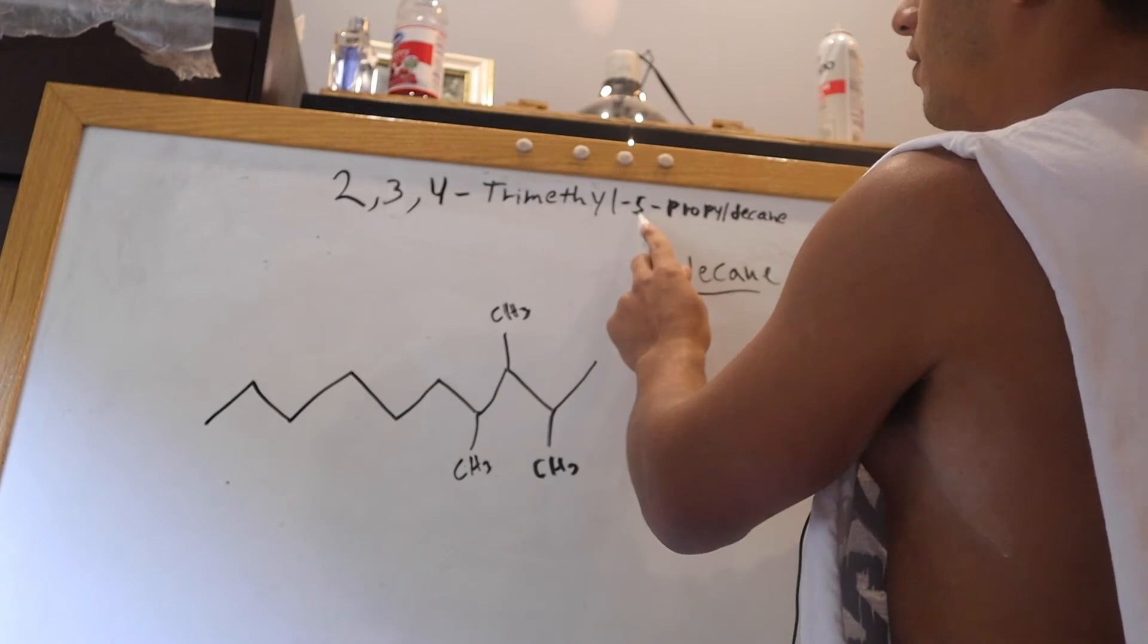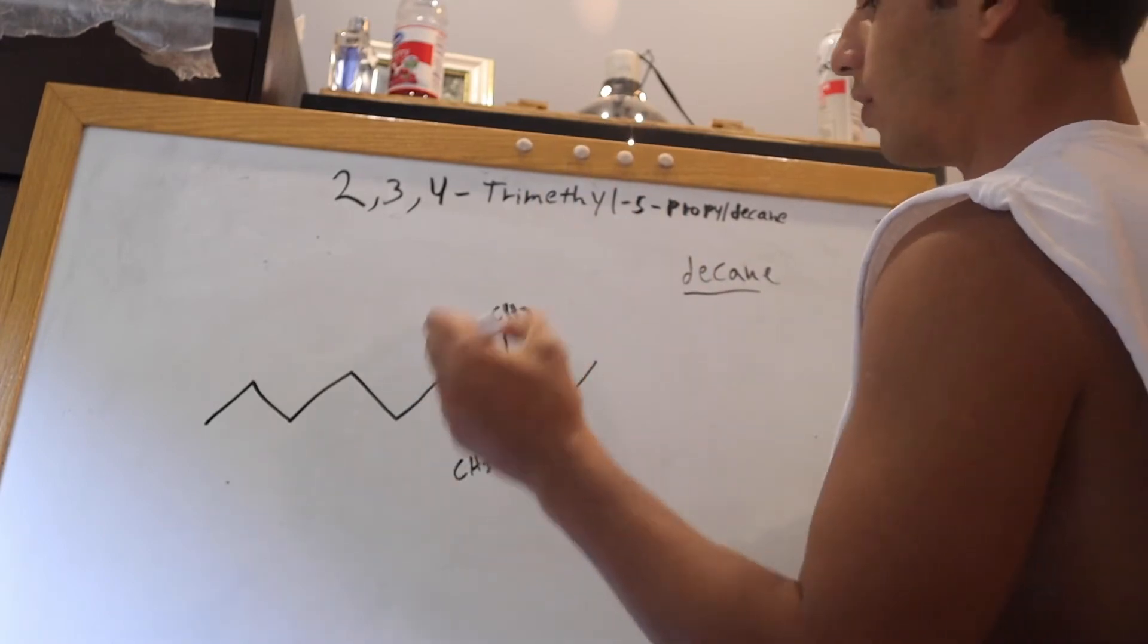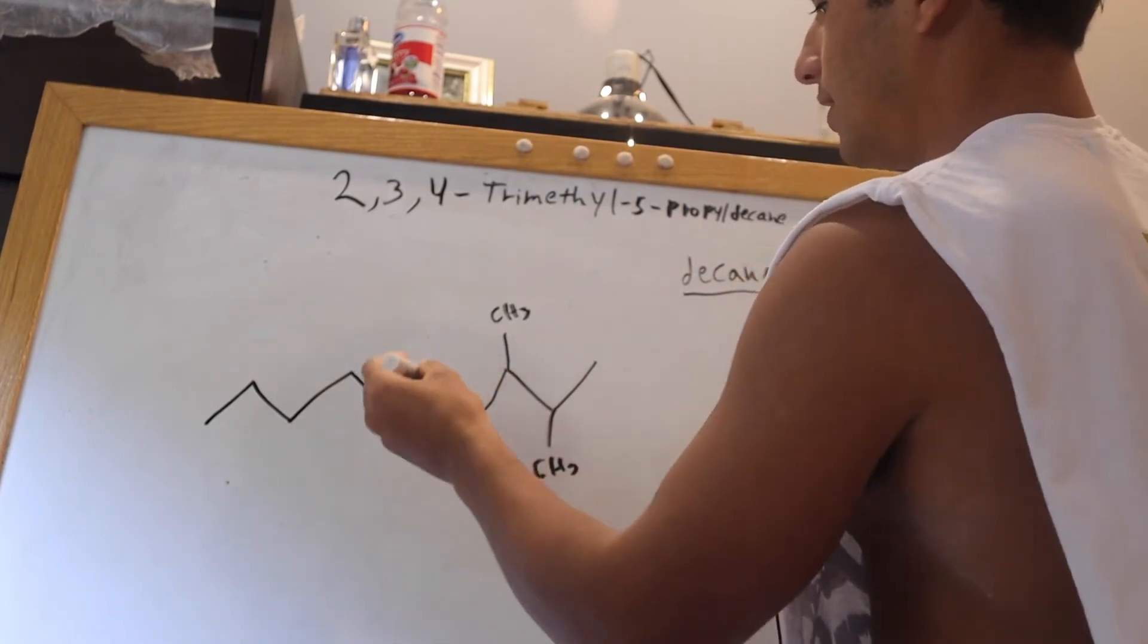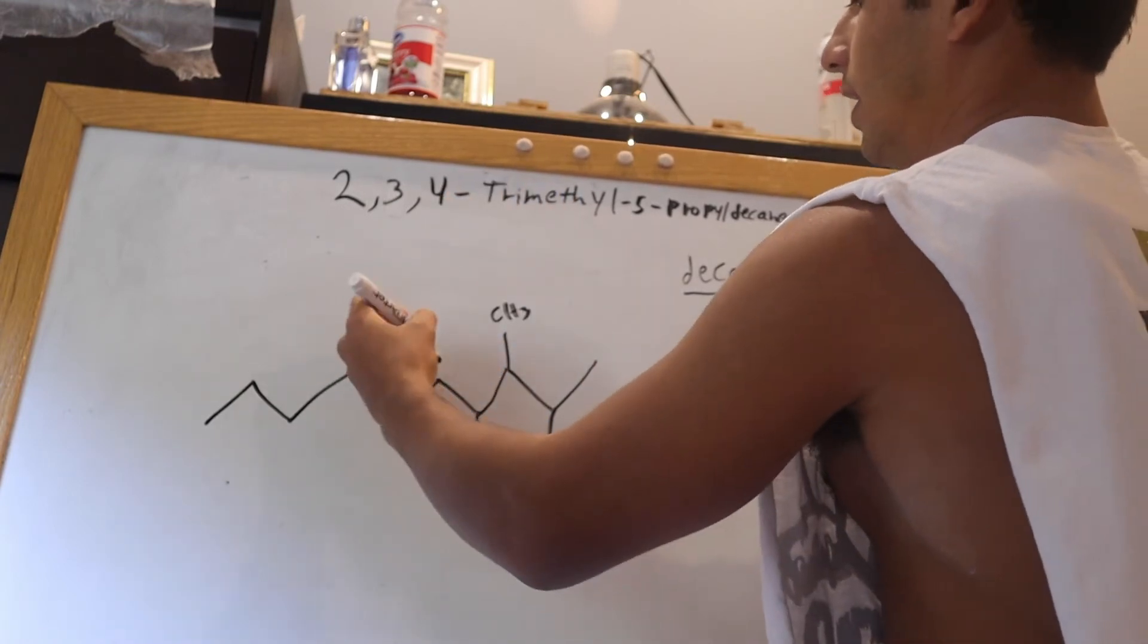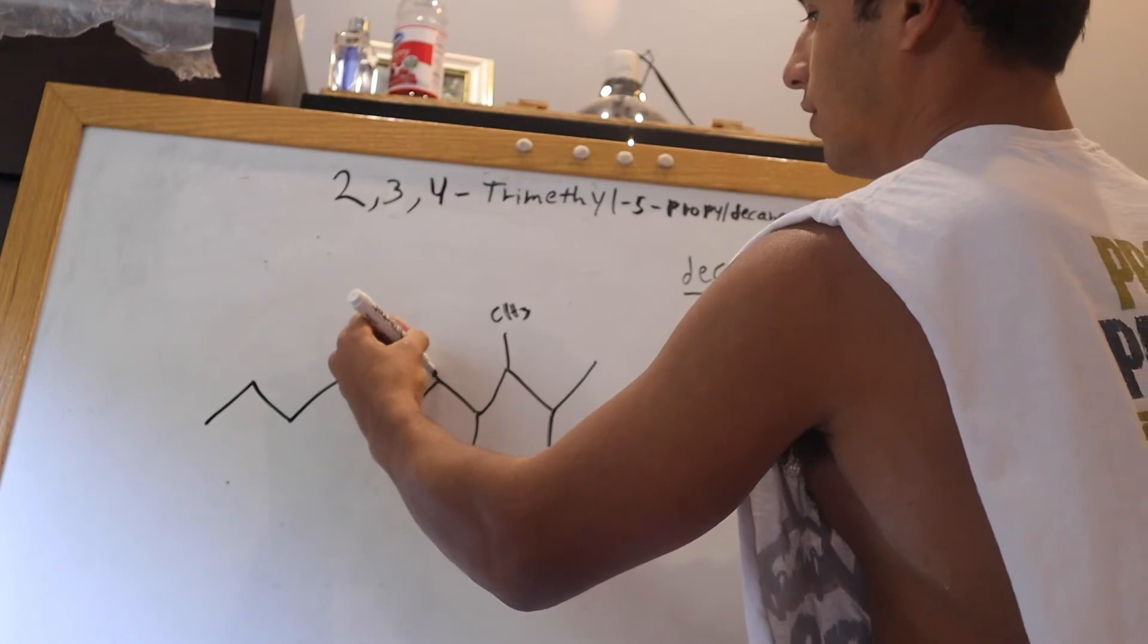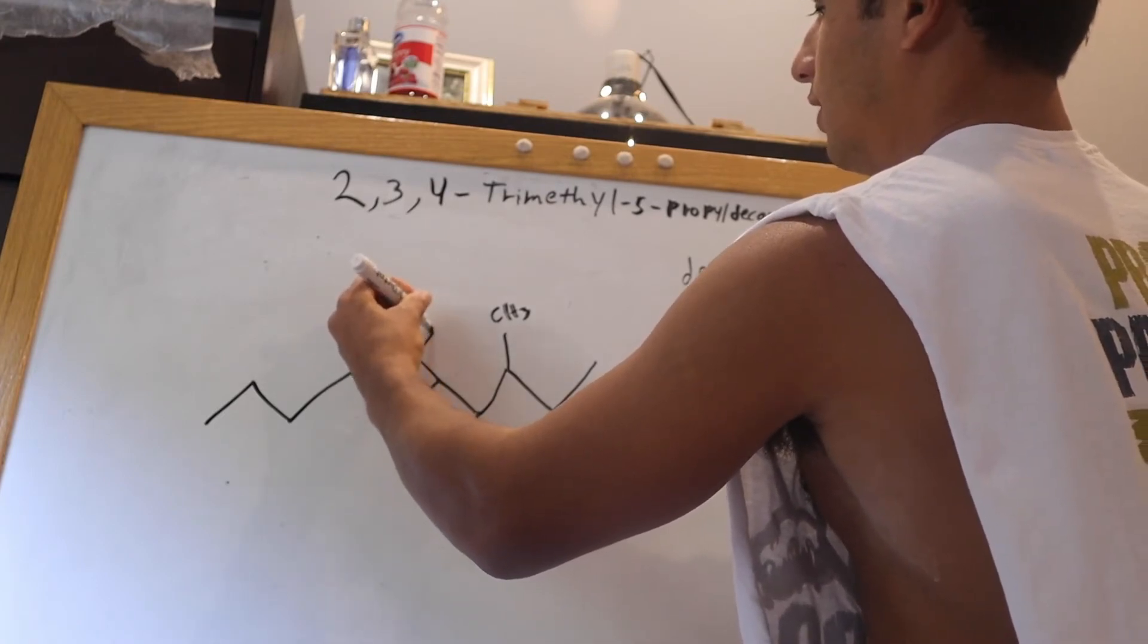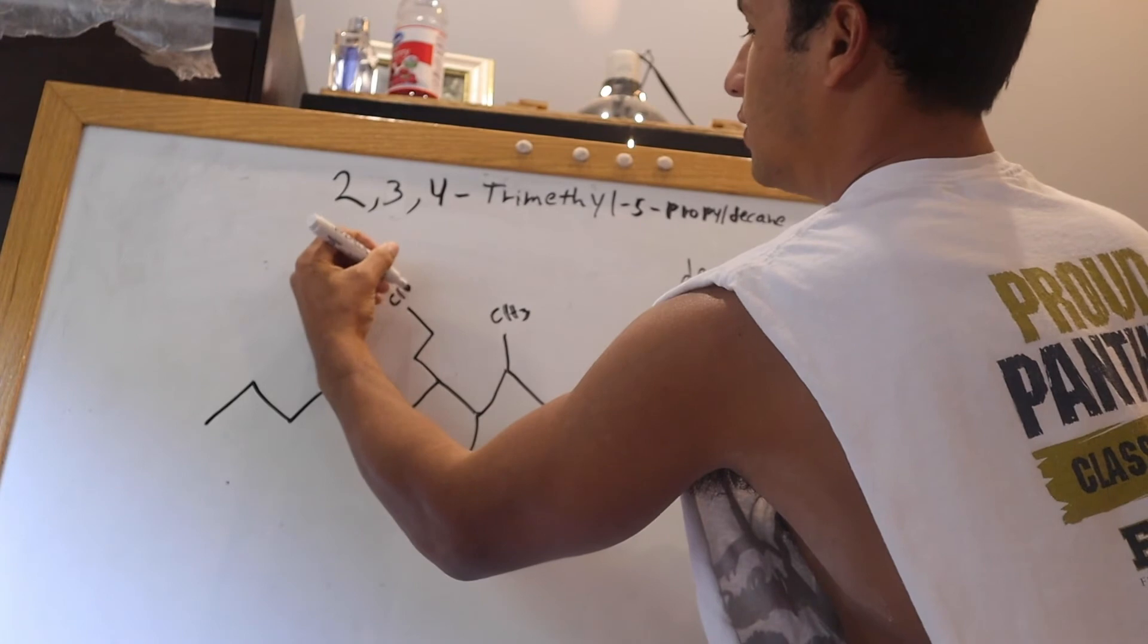Now on the fifth carbon, that's what this 5 is here for, we have a propyl group. So it's going to go, so that is a carbon bonded to two CH2s and a CH3. So we go up for one CH2, another CH2 there, and then this last one up here will be a CH3.